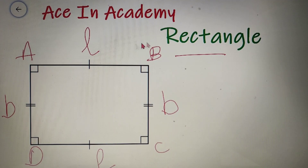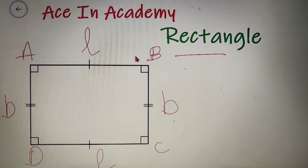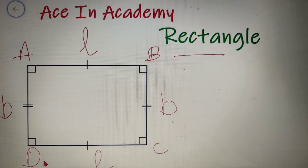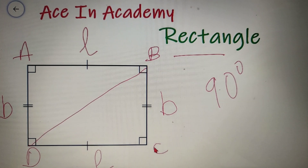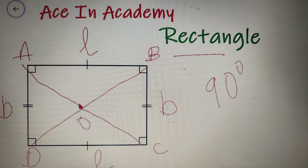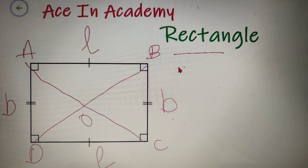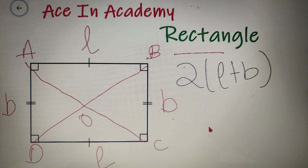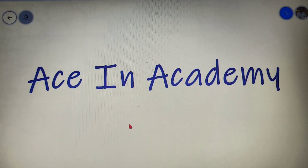Let's do a quick summary of all the properties of a rectangle. The opposite sides are equal: AB equals DC and BC equals AD. All angles are equal and each is 90 degrees. The diagonals are equal and bisect each other, but are neither perpendicular to each other nor do they bisect the angles at the vertices. The perimeter equals twice the sum of length and breadth, and the area equals length multiplied by breadth.